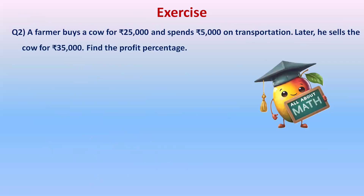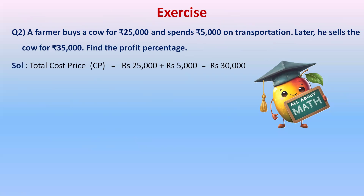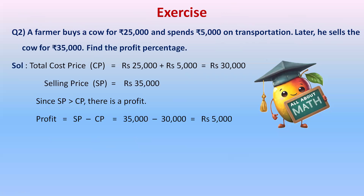Let's see another exercise. A shopkeeper buys a cow for 25,000 rupees and spends 5,000 on transportation. Later he sells the cow for 35,000 rupees — find the profit percentage. Since the shopkeeper is spending on transportation too, the total cost price is 25,000 plus 5,000 = 30,000 rupees. The selling price is 35,000 rupees. Since selling price is greater than cost price, there is profit.